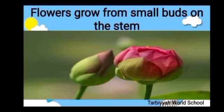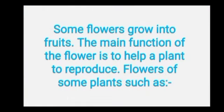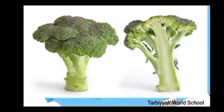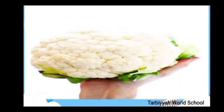Flowers grow from small buds on the stem. You can see the small bud that grows into a flower. Some flowers grow into fruits. The main function of the flower is to help a plant to reproduce.